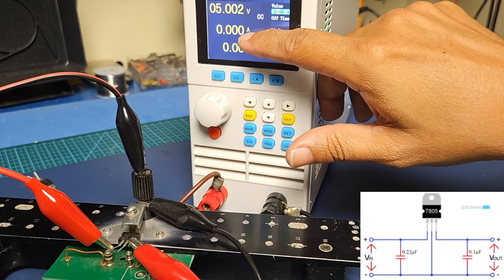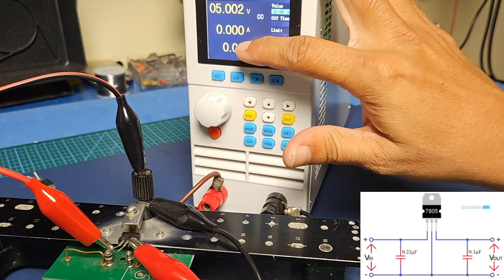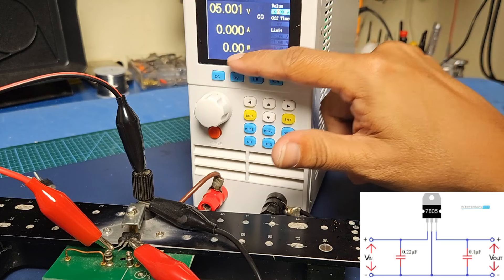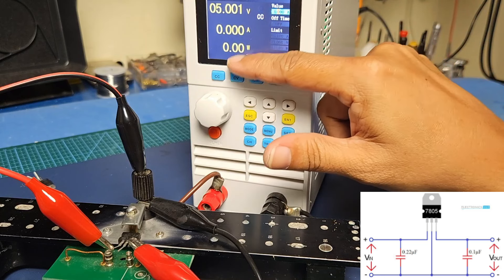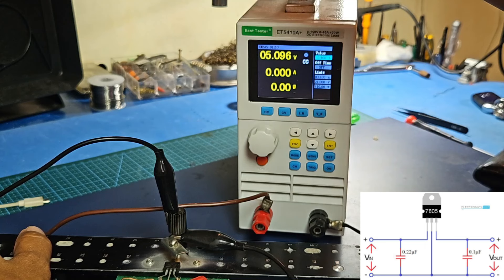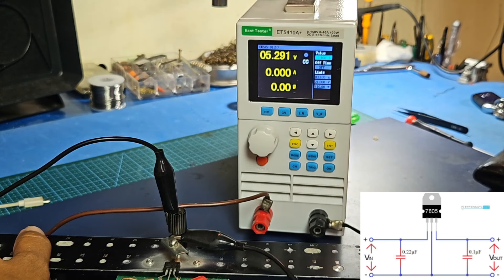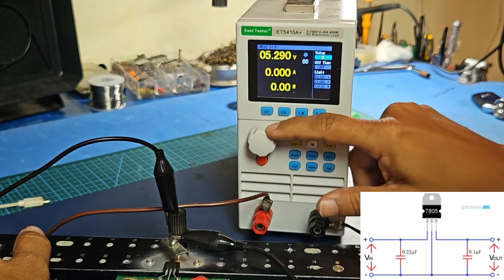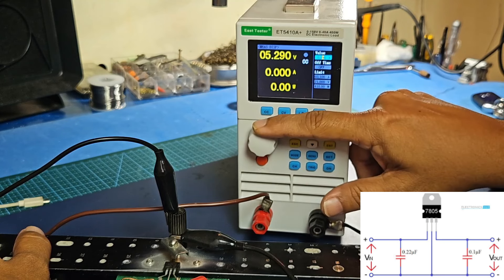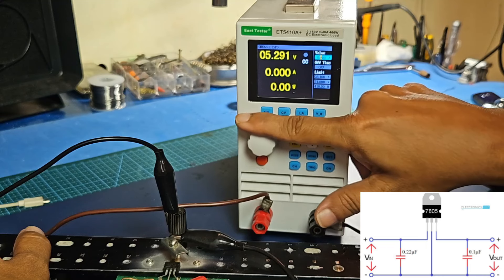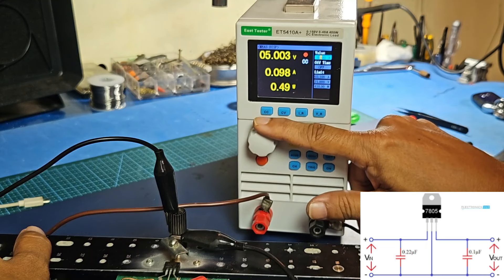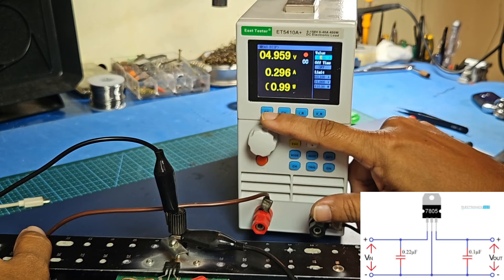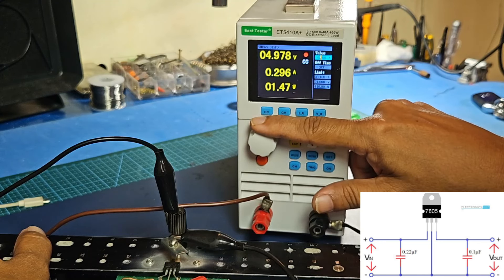The input voltage is 12V. We can increase the load a little bit. At 100mA the voltage is 5V, at 200mA it's 5V, at 300mA it's 4.9V.